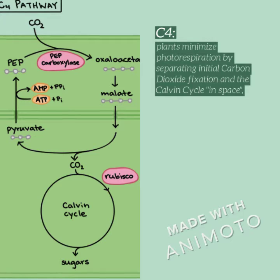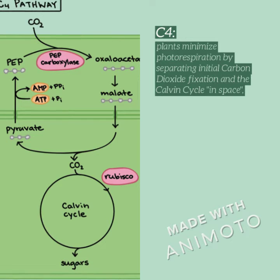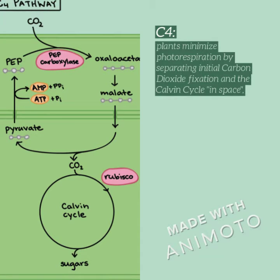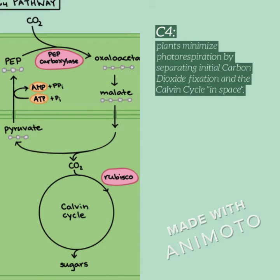Next we have the C4 plants. These plants minimize photorespiration by separating the initial carbon dioxide fixation and the Calvin cycle in space, performing these steps in different cell types. The mesophyll cell is on the top and the bundle sheath cell is on the bottom, and it shows the process where it separates the CO2 in the mesophyll cell.